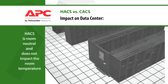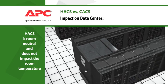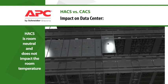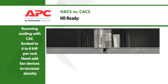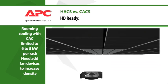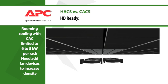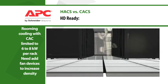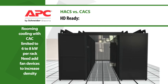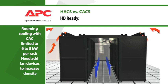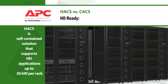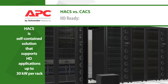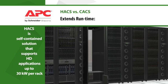The hot aisle containment system can easily be dropped in to any data center without impacting the data center environment. Typical raised floor systems only deliver enough cold air to support a maximum of six to eight kilowatts per rack. Higher densities require specialized design or the addition of fan devices for proper airflow. APC's in-row cooling solution in the hot aisle containment system supports densities of 30 kilowatts per rack and beyond.